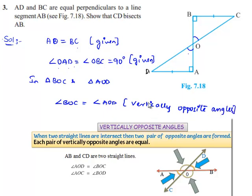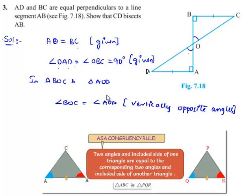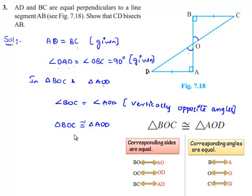Now, according to ASA property, both the triangles, triangle BOC and triangle AOD, are congruent. That is, triangle BOC is congruent to triangle AOD. The two triangles are congruent.